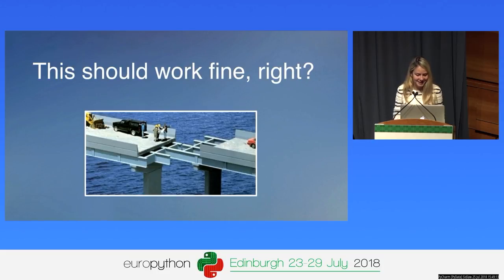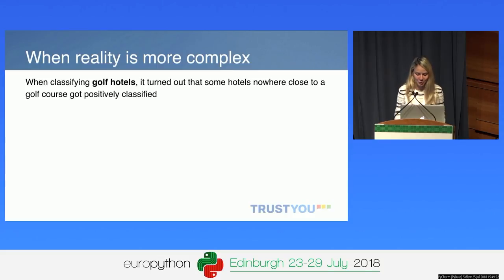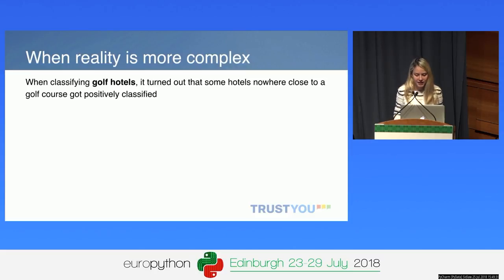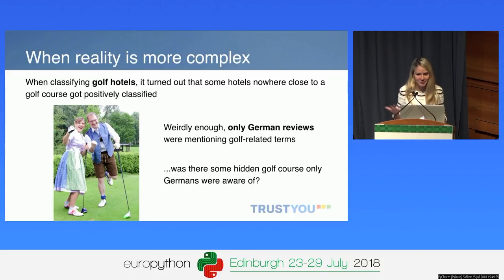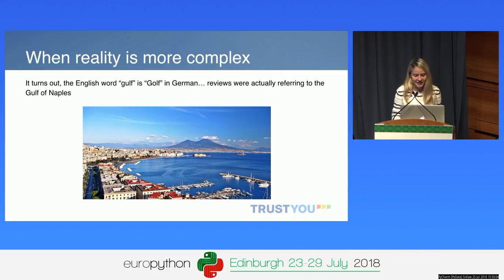It does work quite well in most cases, but I'd like to tell you a few problematic cases — they're also kind of funny. One problem we had is that when classifying golf hotels, we realized that some hotels that were not close to any golf course got positively classified. What was weird was that only the German classifier was really confident about these hotels being golf hotels, but not the classifiers for other languages. We were confused why only Germans were talking about golf courses. What we then realized is that the English word 'golf' is actually 'Golf' in German too — but the reviews were referring to the Gulf of Naples, not a golf course. Still, there were a lot of mentions of the word 'golf,' of course.